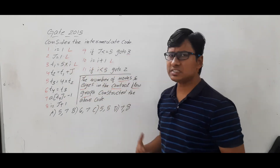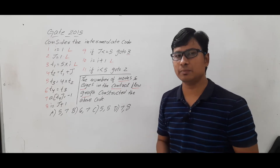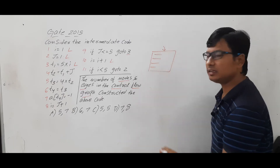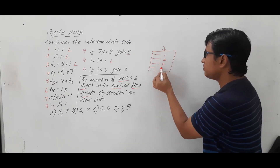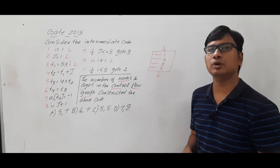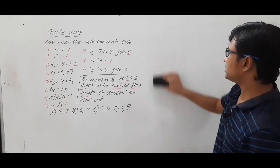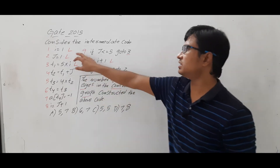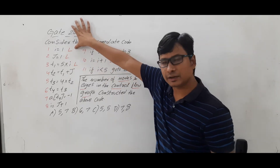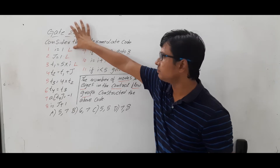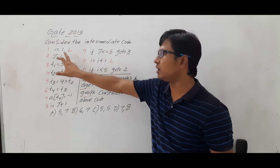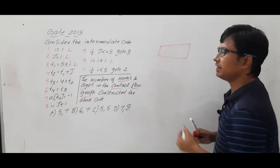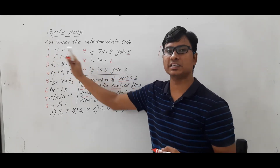Once I identify the leaders, I need to identify the basic blocks. A basic block consists of a sequence of instructions that will be executed sequentially — it has an entry, and instructions execute one after another without any goto or jump instructions. To identify basic blocks, take the first leader and go till the next leader, but do not include the instruction which is at the next leader.